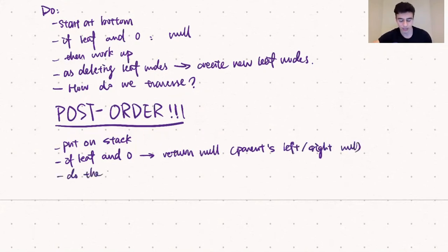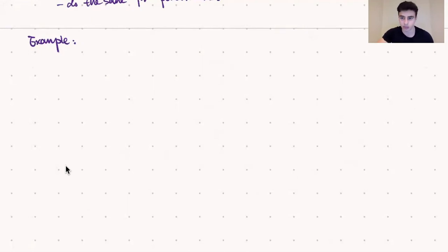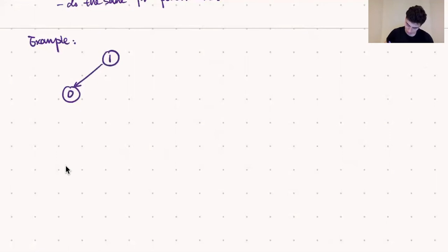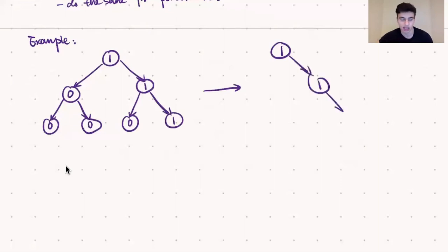Let's take a look at an example of this intuition in practice. We'll start with a tree rooted at one, with a left subtree rooted at zero with two children both zeros, and the right subtree rooted at one with a left child zero and a right child one. We know the resulting tree should be a single linked list from the root to the rightmost node, but let's see how we get there.